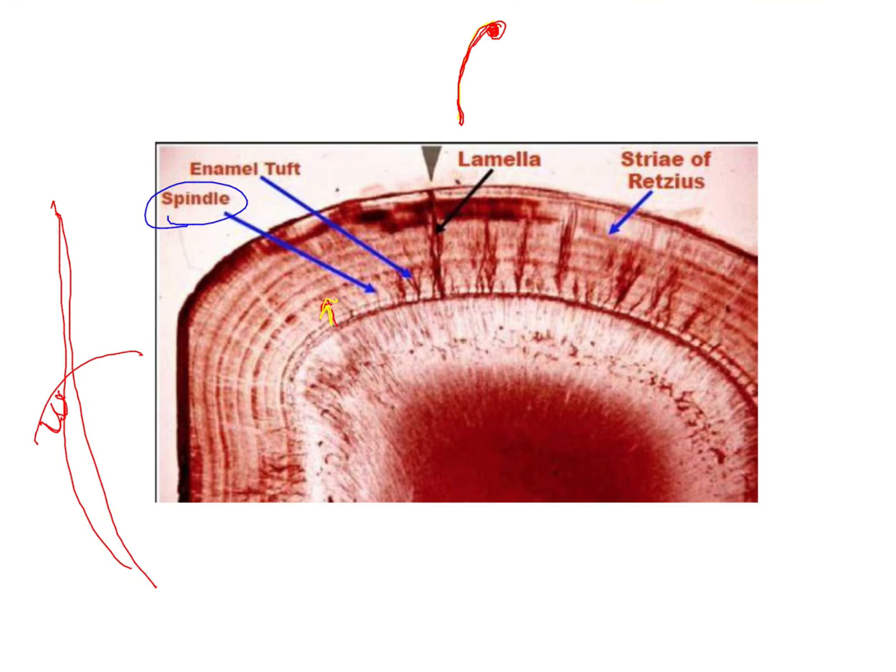Enamel tufts, on the other hand, are what you see here. I'll use a different color. This is an enamel tuft. A tuft basically appears like a tuft of grass. They are attached to the dentinoenamel junction and are seen within the enamel. These enamel tufts are present within the inner one-third of the enamel; they do not extend more than the inner one-third. Then you have what are called lamellae. Lamellae are nothing but vertical lines